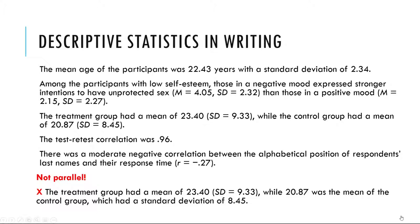When you have a small number of results to report, it's often most efficient to write them out. Here are some examples. The mean age of the participants was 22.43 years, with a standard deviation of 2.34. Among the participants with low self-esteem, those in a negative mood expressed stronger intentions to have unprotected sex, with a mean of 4.05 and standard deviation of 2.32, than those in a positive mood, with a mean of 2.15 and standard deviation of 2.27.